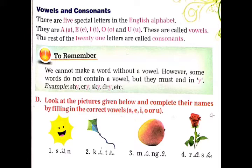The rest of the 21 letters are called consonants. इसके अलावा जो 21 letters होते हैं वे consonants कहलाते हैं. To remember: we cannot make a word without a vowel. हम एक vowel के बिना एक word नहीं बना सकते हैं. However, some words do not contain a vowel, but they must end in Y. हालाँकि कुछ words में vowel शामिल नहीं होता है, लेकिन उनका end Y से होता है. Examples: sigh, cry, sky, dry, etc.